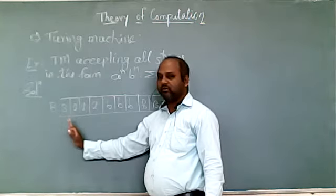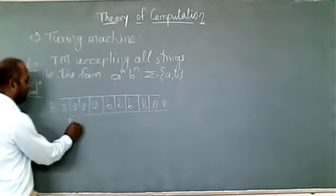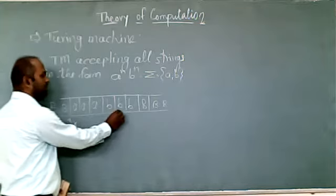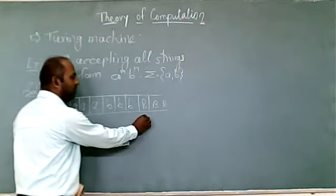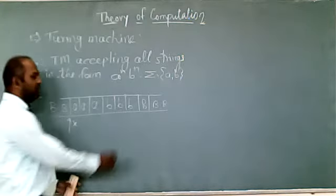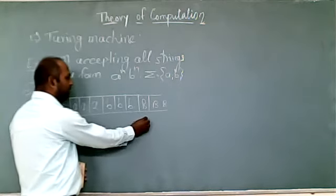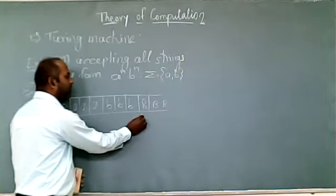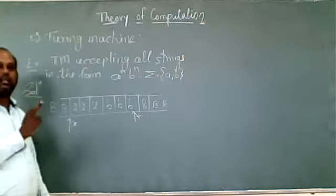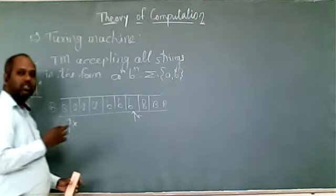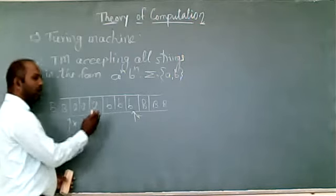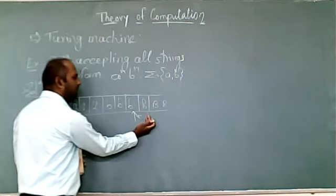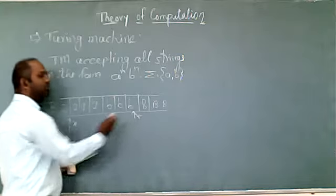The logic starts from the first symbol. We replace the first a with x, then skip all remaining a's and b's to the right. When we reach the blank, it indicates we are at the end. We keep the blank as it is and change direction — turn left. This gives us the last alphabet. Remember this logic, because in many problems we require it: skip everything, and when getting a blank, keep it as is and change direction to left to get the last alphabet.